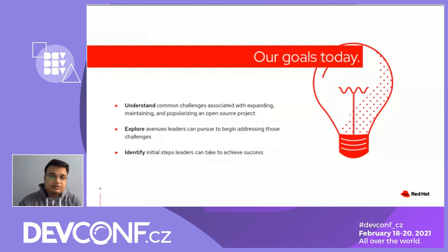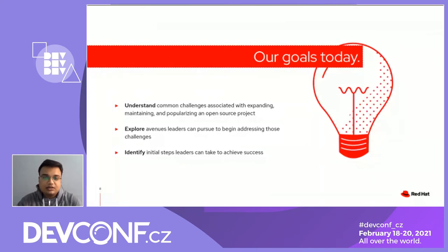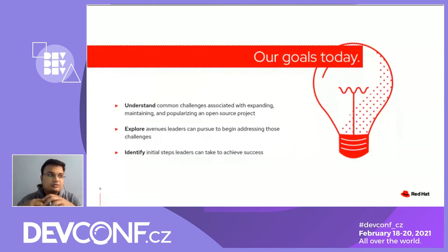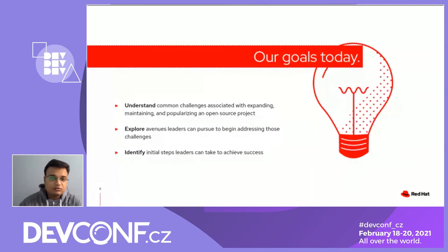We will explore some of the goals for today. We will be talking about the responsibilities leaders have, the transition pathway from contributor to leader, and some ways in which excellent leaders help the project avoid common social challenges. Our goals include understanding common challenges associated with expanding, maintaining, and popularizing an open source project; exploring steps new community leaders can take to address those challenges; and identifying steps leaders can take to achieve project success. Every project is different, so you will need to translate this advice into your own context.